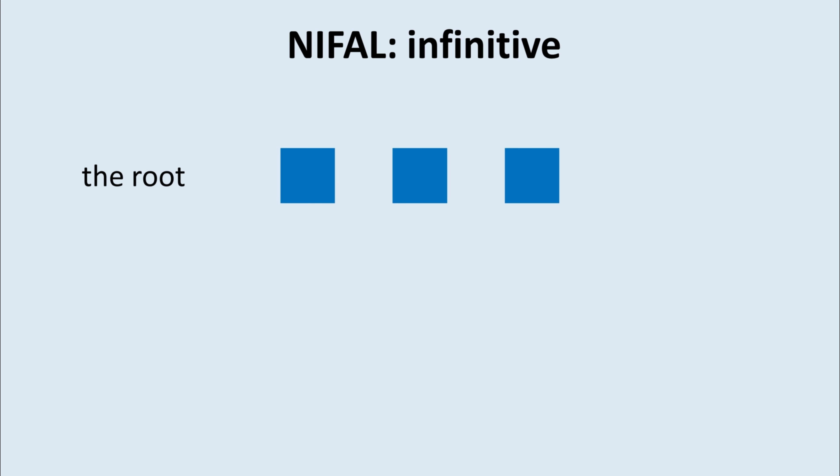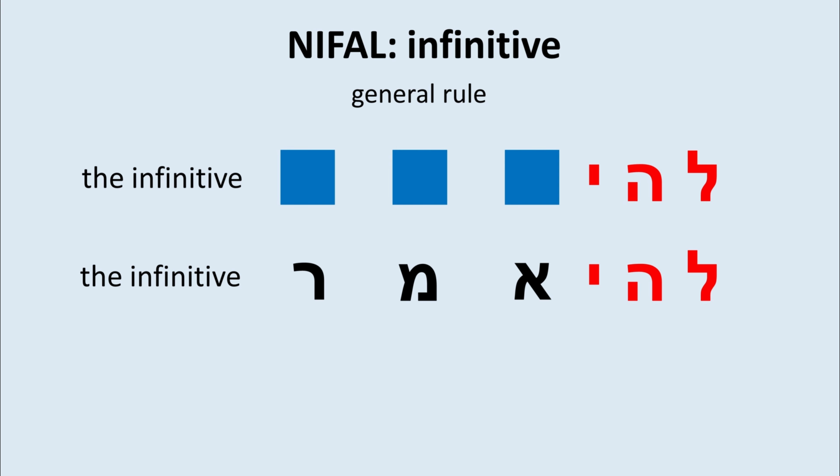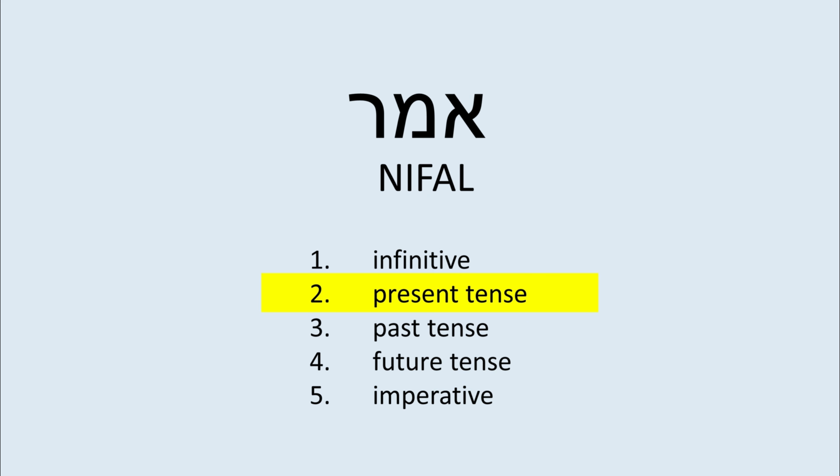Infinitive. The general rule says you take the root and put le-he in front. We do this now with our root and arrive at le-he-a-mer — to be said, to be told. Simply put le-he in front of the root and you're done. That was chapter one.